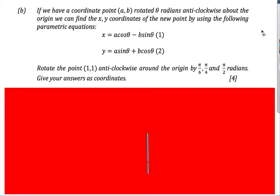The next part has us rotate a coordinate point (a, b). We're not rotating the line anymore — just rotating a point. We have some parametric equations: if we know theta, we substitute it in to get the x-coordinate and the y-coordinate. So we rotate the point (1,1) anti-clockwise by pi/6, pi/4, and pi/2. We start with a=1 and b=1.